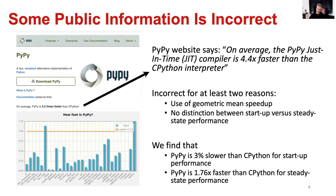What we found using a statistically rigorous methodology is that PyPy is actually 3% slower than CPython for startup performance. And when we look at steady state performance, we find that PyPy is only 1.76 times faster than CPython, and not 4.4 or 4.2 times faster.